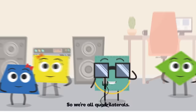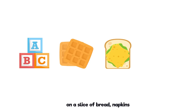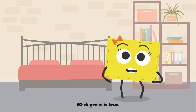With a quad squad! Quad means four sides, so we're all quadrilaterals. Like a chess board, I'm a square. Or like a bean bag flying through the air. Blocks, waffles, cheese slice on a slice of bread. Napkins, or the graduation cap on your head.